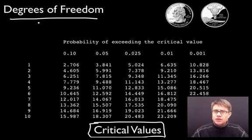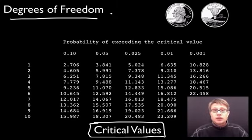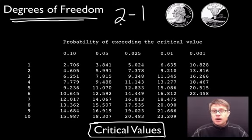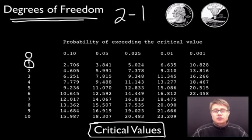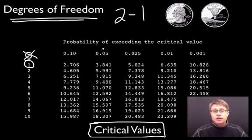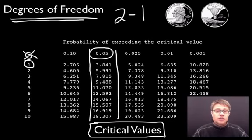First, degrees of freedom. Since we're comparing outcomes, you need at least two outcomes in your experiment. With heads and tails we have two outcomes, and you simply subtract one to get degrees of freedom — so two minus one gives us one degree of freedom. If you just have one outcome, you have nothing to compare it to. Next, you look for a critical value. The critical value we'll always use is the 0.05 value — that column right here. So 3.841 is the number I know because it means I'm in the right column.